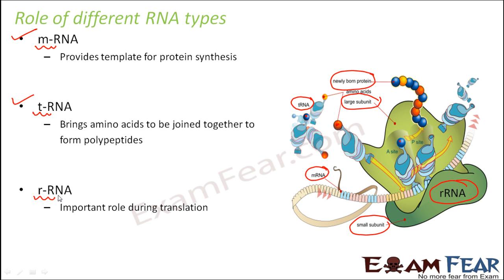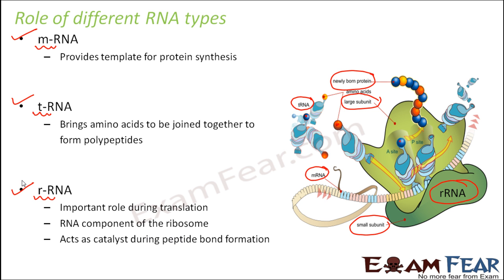So these are the three types of RNA. Once you have this brief idea about mRNA, tRNA, and rRNA, it will become easier to understand the process of transcription as well as translation. rRNA is a part of ribosome — it is the RNA component of ribosome, hence called ribosomal RNA. It acts as a catalyst during peptide bond formation and this takes place in the larger subunit of ribosomes.